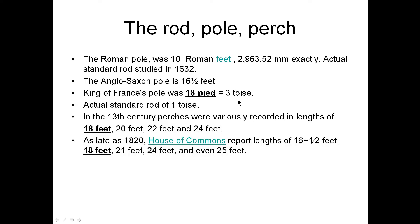The King of France used a pole of 18 pied, equal to three toise. A toise is a unit of measure developed by Charlemagne in 780 AD in France. The actual standard rod of the toise was an actual rod put into a castle, which I'll talk about in a minute. In the 13th century, perches — another name for a rod or pole — had various lengths: 18 feet, 20 feet, 22 feet, and 24 feet, and even as late as 1820 this was recorded through the House of Commons. I have underlined and bolded 18 feet as the common unit of measure.